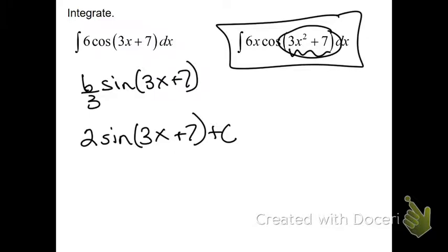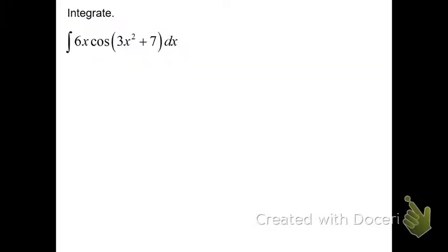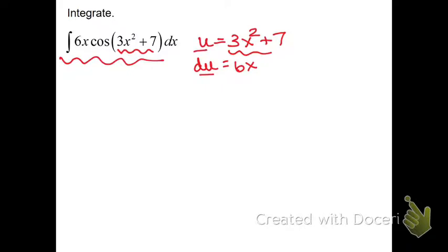All right, so here's today's lesson. We're going to let the inside function, we're going to call that u. We're going to let u equal everything inside there, 3x squared plus 7. Then we're going to find du, which stands for the derivative of u. The derivative of this is 6x. Now we're going to rewrite all of this in terms of u's and du's and no more x's. By the way, technically I messed something up. The derivative of this is 6x dx, technically, although I often forget it.